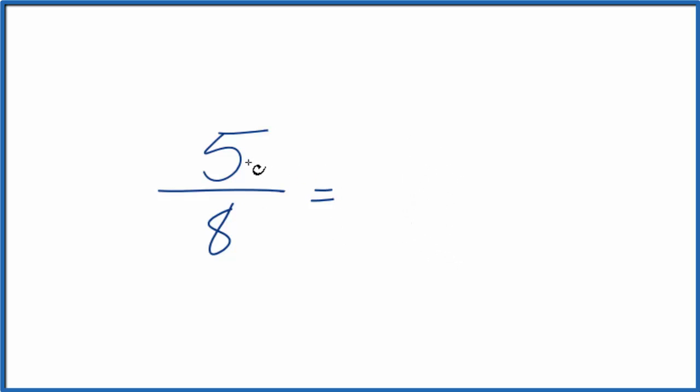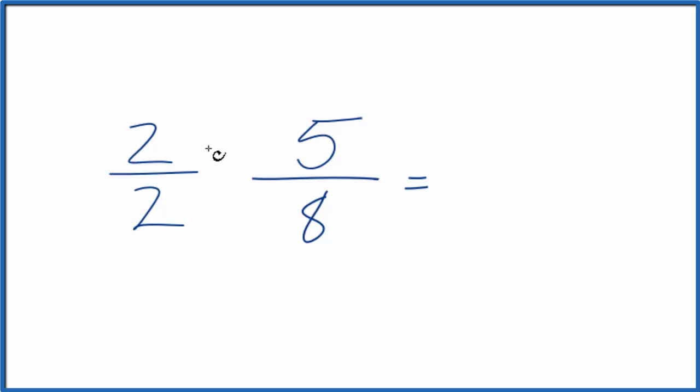So we could multiply 5 over 8 by 1. That would give us the same value. But instead of 1, let's multiply it by 2 over 2. 2 divided by 2, it's still 1.